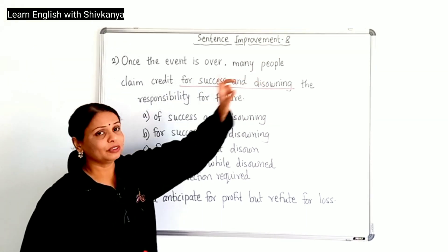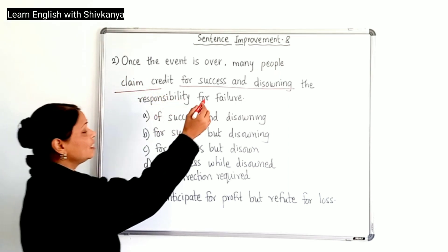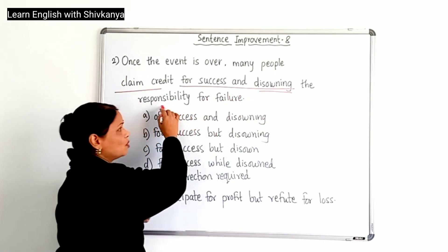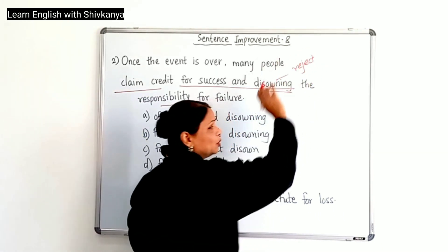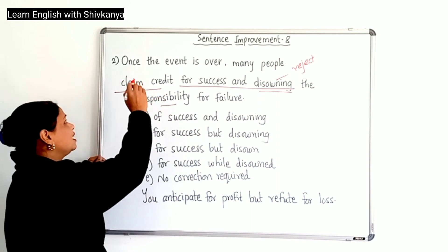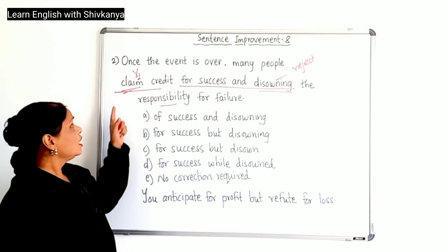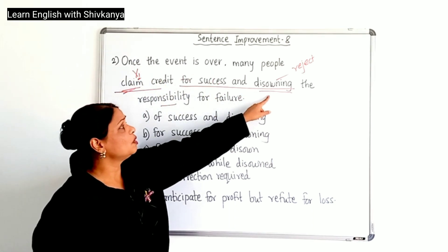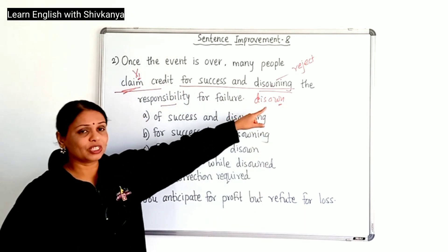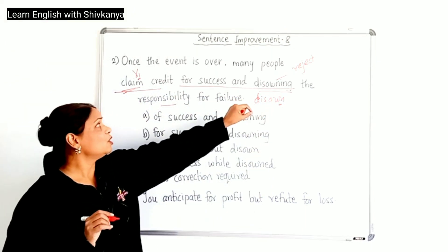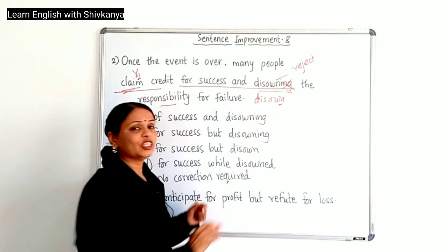Many people have done two things. One is claim credit, and second, disowning the responsibility. What's the meaning of disowning? Disowning means to reject, to refute. When many people 'claim' — 'claim' is the V1 form of the verb — in the same way, 'disowning' should be 'disown.' When two verbs are used in the simple present tense, they should be in V1 form. The ING form is not required here. This is one correction.